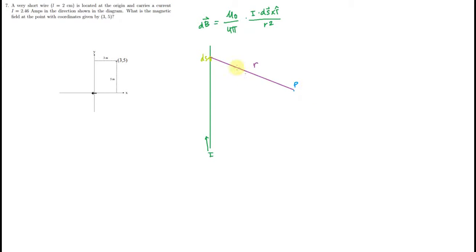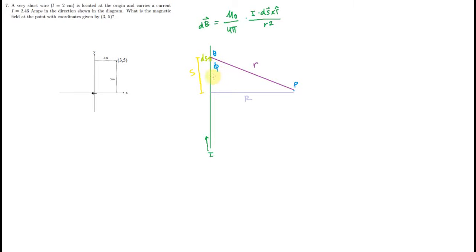So let's figure out what the Biot-Savart Law would be in the case of the infinite line approximation. In order to do that we need to define a couple more variables. I'm going to call this little r, and then another r right here — that is just the line that's normal to the wire and point P — and I'm going to call this one big R. Then I'm going to define the distance between ds and that normal line as s, and then define a couple of angles: this angle is going to be theta, and this angle is going to be phi.